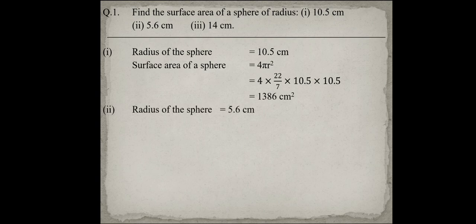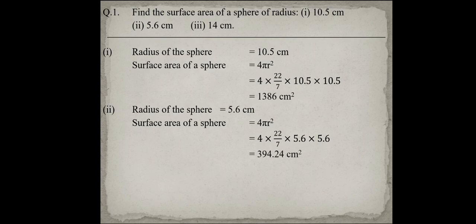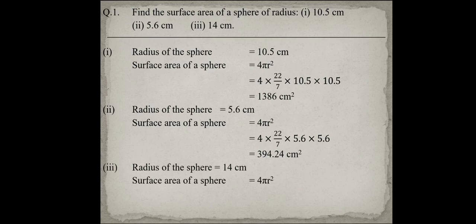In the second part, radius of the sphere is 5.6 cm. Again simply put the value of radius in the formula: 4 into 22 upon 7 into 5.6 into 5.6. So the area of this sphere is 394.24 cm². Again in the third part, radius is 14 cm. Put the value: 4 into 22 upon 7 into 14 into 14, that is equal to 2464 cm².